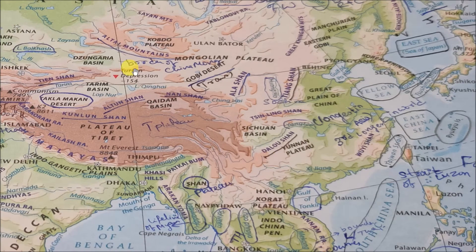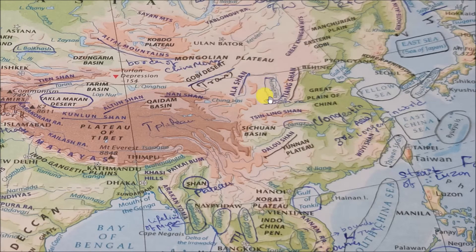When we look at China, all the mountains have 'Shan' in their name. For example: Dalao Shan, Tiyang Shan, Wuhi Shan, Alang Shan, Altun Shan, Nan Shan, Kunlun Shan — all these mountains are in China.